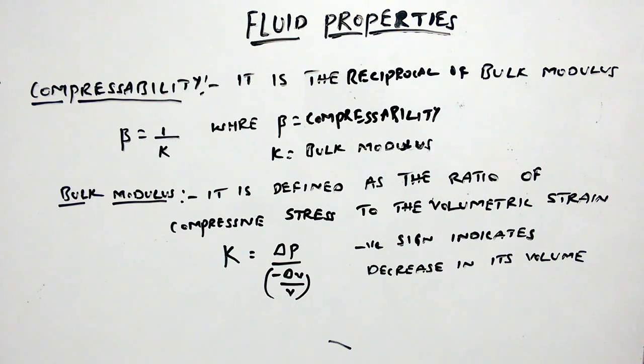K = ΔP / (-ΔV/V), where ΔP is the increase in pressure and ΔV/V is the volumetric strain.